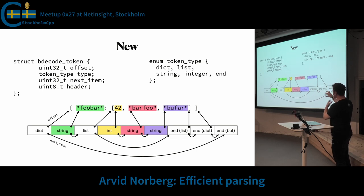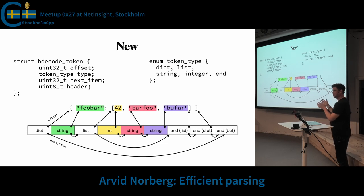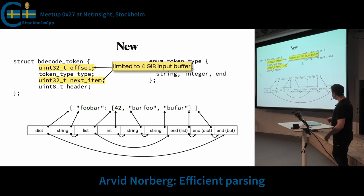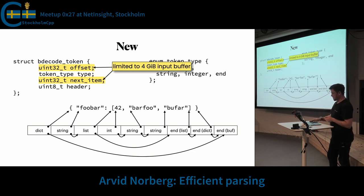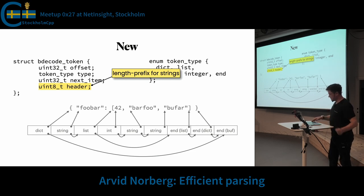Each token looks something like this. You have the offset into the buffer, the type as an enum of different token types, and the next item — that's the pointer. Instead of using pointers I use integers, because pointers are eight bytes while indices can be made four bytes, and I don't need to parse more than four gigabytes. This has the obvious limitation that you can only parse four gigabytes of input. The header is a length prefix for strings so that you don't have to reparse the length prefix — you can get to the string data immediately.